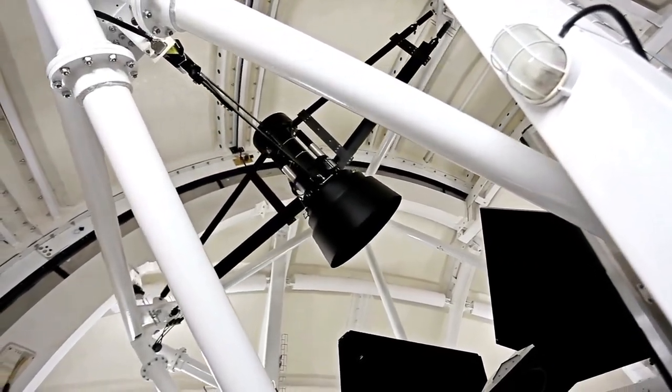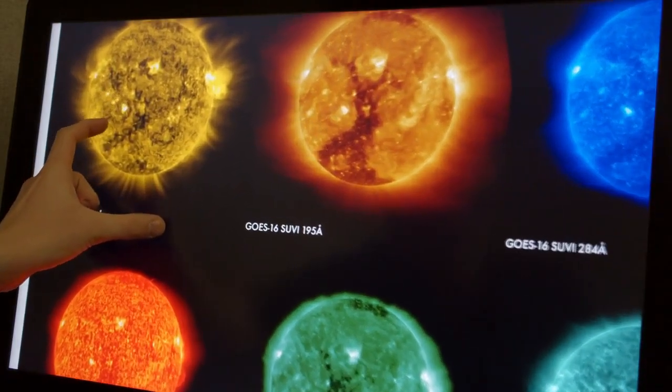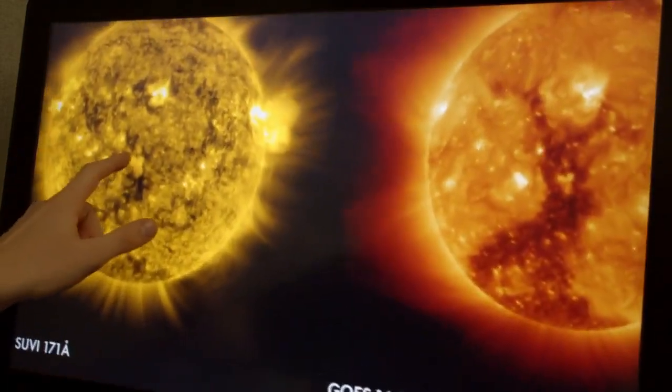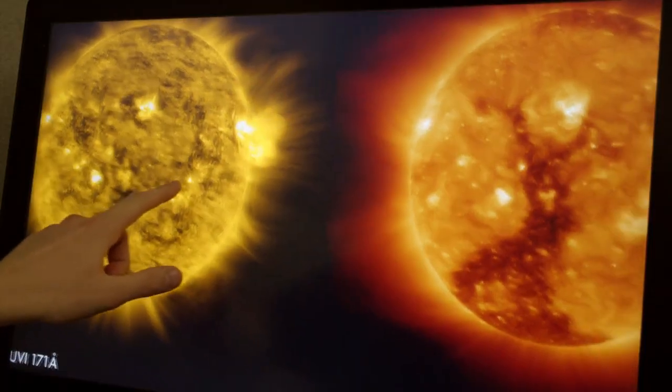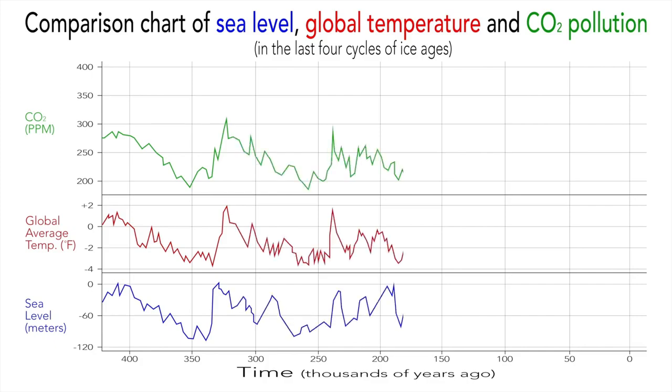Since Betelgeuse is located 650 light-years away, any supernova event happening at present would only become visible to us after 650 years due to the limitations imposed by the speed of light. Therefore, it is highly unlikely that we will witness the star's dramatic demise during our lifetime.